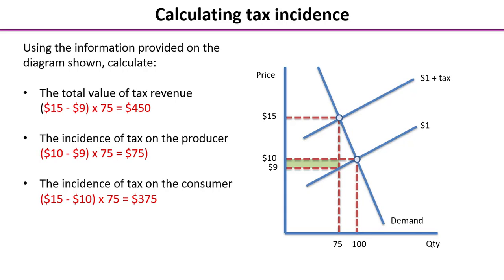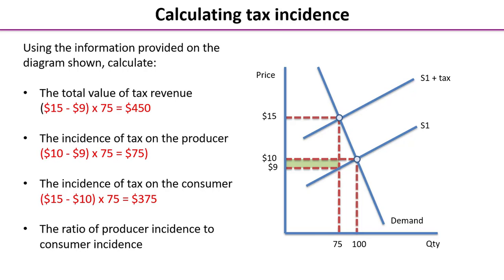The remaining amount must be the incidence of tax on the consumer: $450 minus $75, or alternatively $15 minus $10 = $5 multiplied by 75 = $375. Don't forget those units — they're really important. Finally, to build a different quantitative skill, you need to know how to express ratios. The ratio of producer incidence to consumer incidence is 75 to 375, which simplifies to a ratio of 1 to 5.